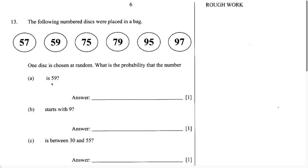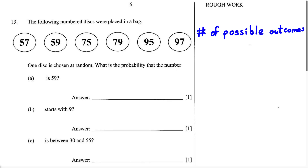Let's understand what this question is asking us. The following numbered discs were placed in a bag — think of it as a piece of paper where you write down a number and put it in a bag. One disc is chosen at random without looking. They want to know what is the probability, or what is the chance, that the number is going to be 59. There's a formula we use for probability: number of possible outcomes over number of total outcomes.